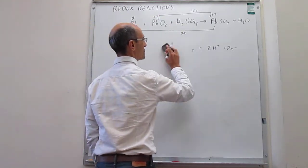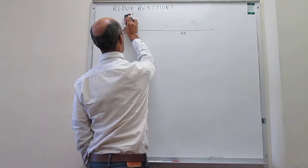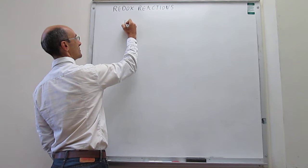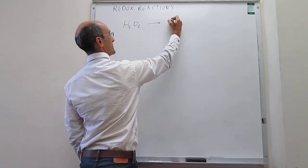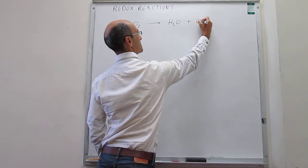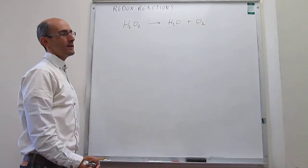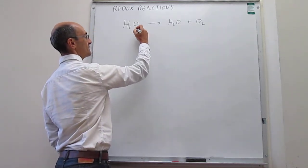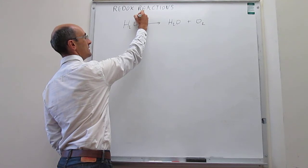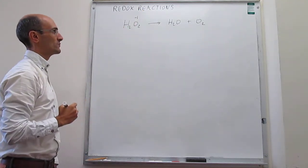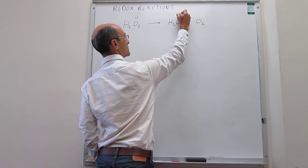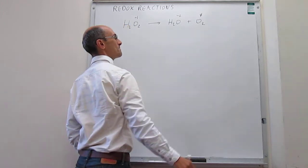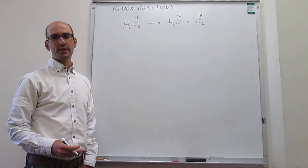Let's look at this disproportionation reaction, which is the decomposition of hydrogen peroxide into water and oxygen. This is a disproportionation reaction because the redox species is oxygen, which in peroxide has an oxidation number of minus 1, but in water has an oxidation number of minus 2, and in elemental oxygen it is 0.